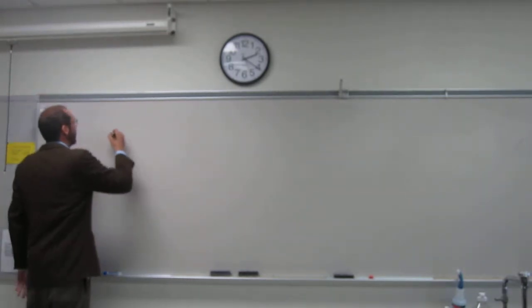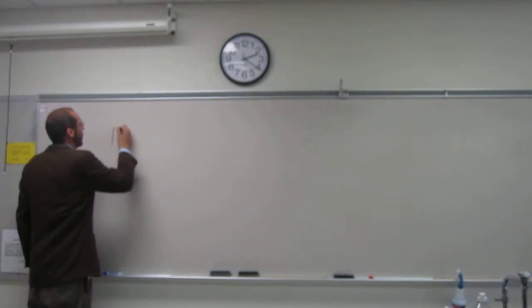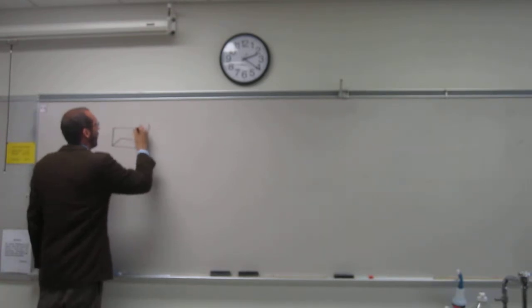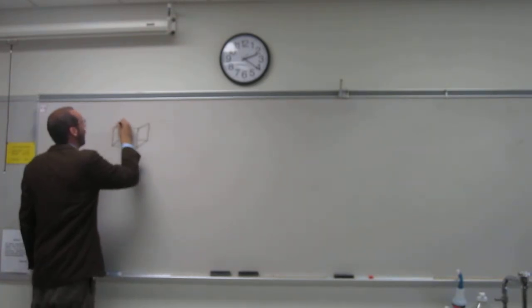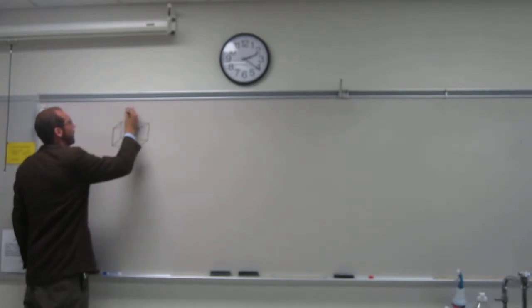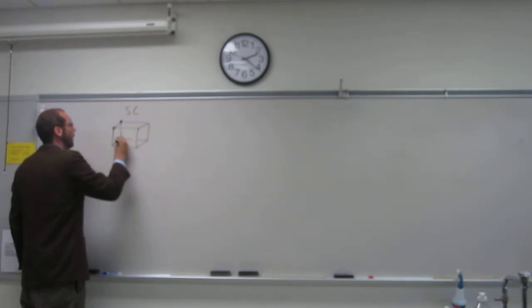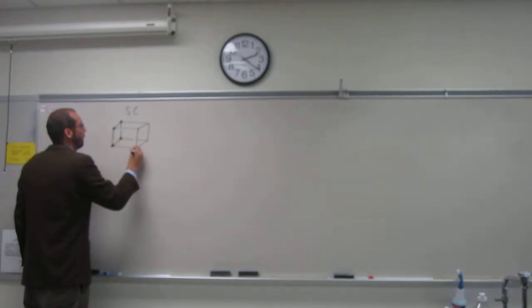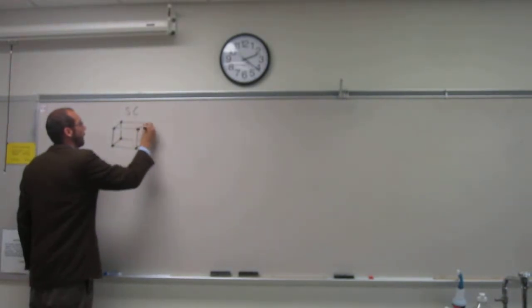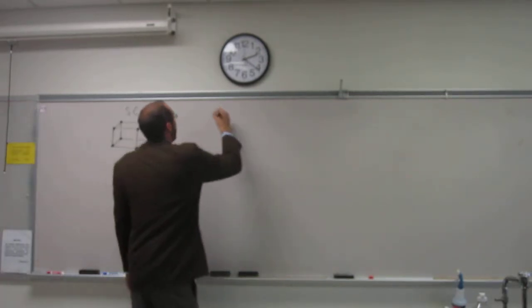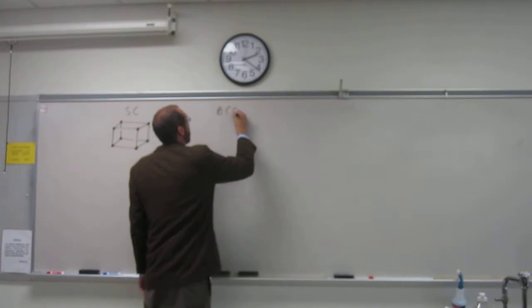When we look at this, we'll draw some cubes. For the simple cubic structure, we have atoms at the corners: one, two, three, four, five, six, seven, eight—like that. Next is the body-centered cubic.